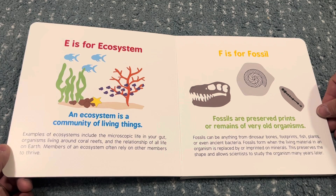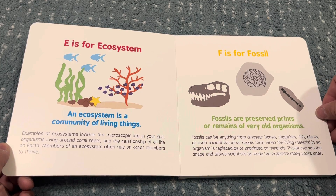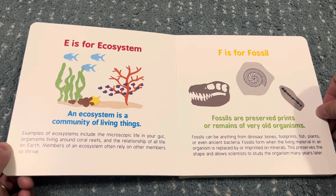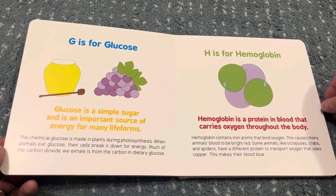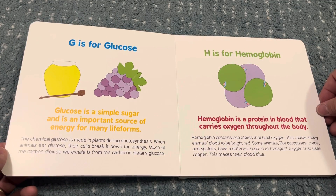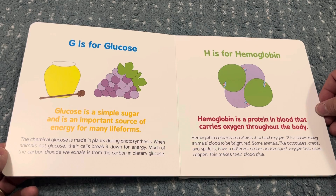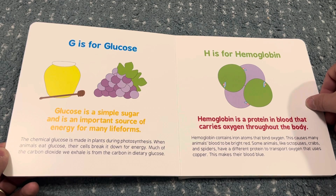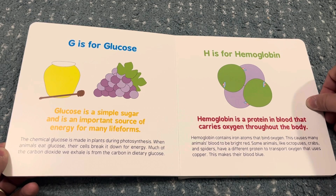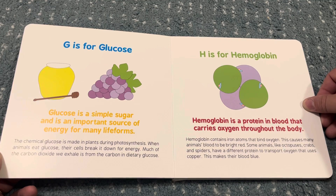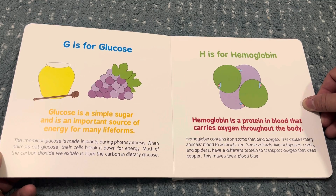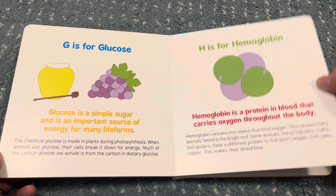F is for fossil. Fossils are preserved prints or remains of very old organisms. G is for glucose. Glucose is a simple sugar and is an important source of energy for many life forms. H is for hemoglobin. Hemoglobin is a protein in blood that carries oxygen throughout the body.